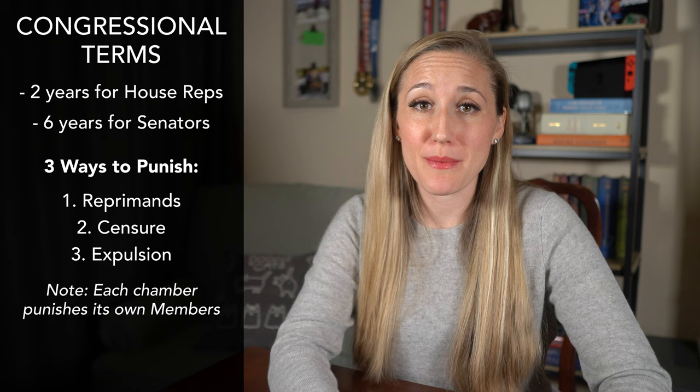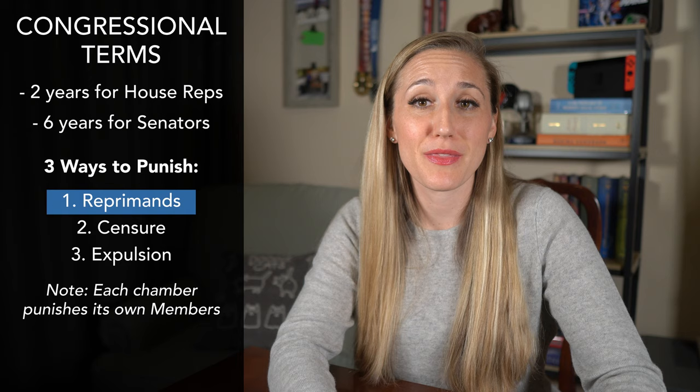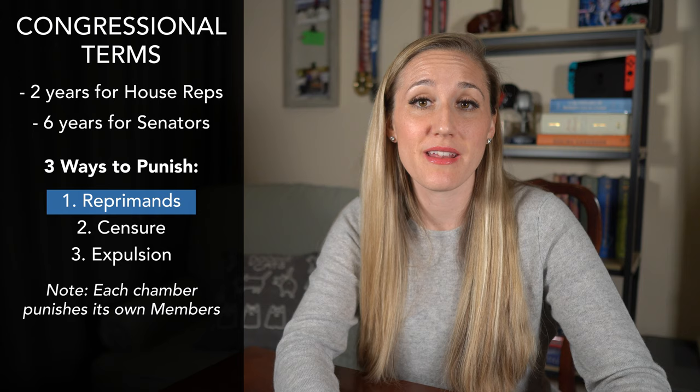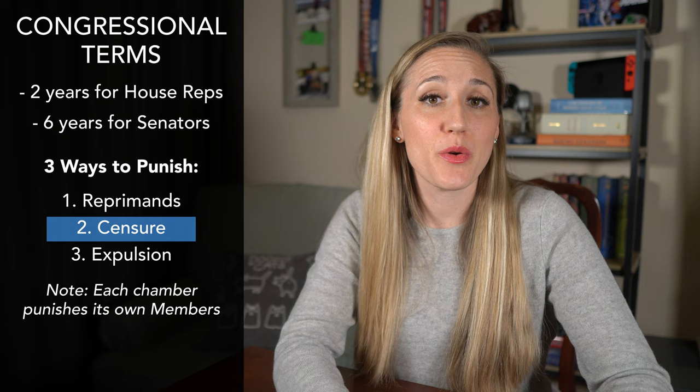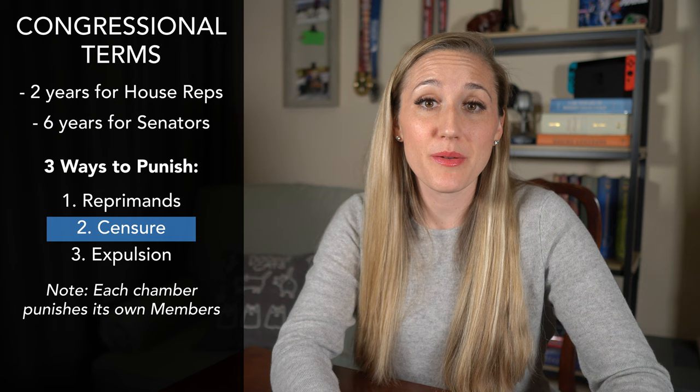The first two types of punishment — reprimand and censure — only need a majority of votes in order to punish the Congress member. Out of the three, a reprimand is the least serious form of punishment. It can be as simple as a public statement that serves as a slap on the wrist, basically making a statement that the House or Senate does not approve of the Congress member's behavior. Censure is more serious than a reprimand, and it often coincides with pulling the member off of any committees he or she may be sitting on.